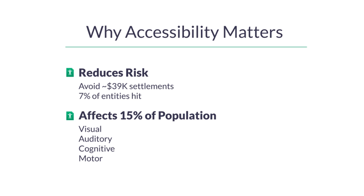Then you have the other side — the human side. 15% of users in your community have some kind of disability, whether it's visual, auditory, cognitive, or motor. If you've even held your cell phone sideways trying to read something, you've experienced an access barrier, and nothing's harder to read on a phone than a PDF.